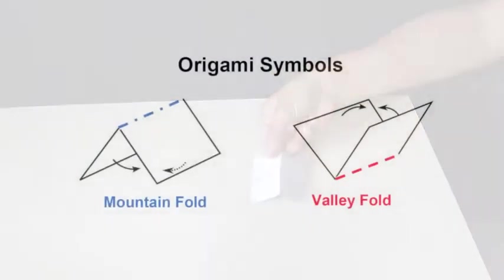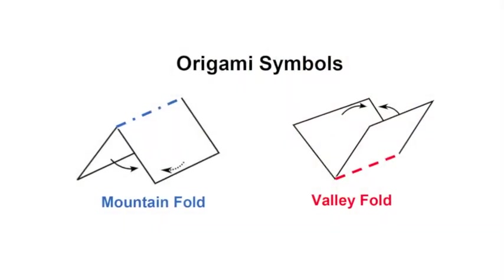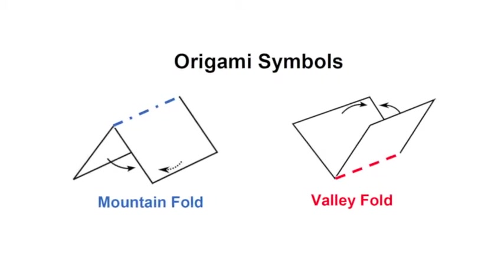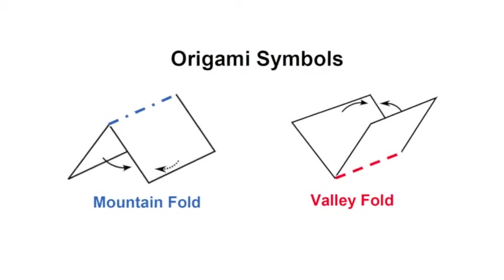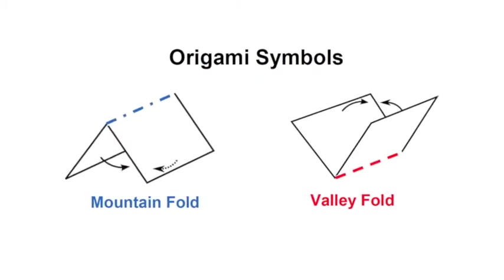Origami communicates in symbols. The mountain fold uses dash dot line and the valley fold uses dash line. These symbols are vocabulary for origami.